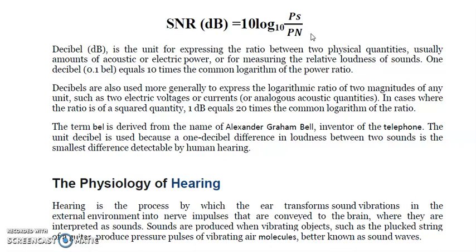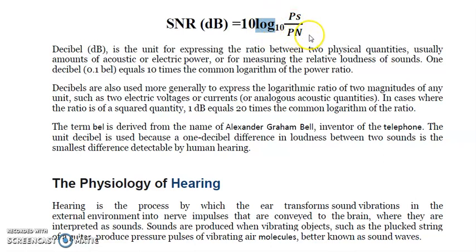Since bel is a bigger unit, we use the smaller unit: decibel. One bel equals 10 decibels, or equivalently one decibel equals 0.1 bel. The expression log₁₀ (Ps/Pn) represents one bel. To convert to decibels, we multiply by 10, giving the formula SNR (dB) = 10 log₁₀ (Ps/Pn).